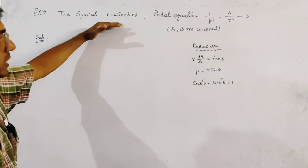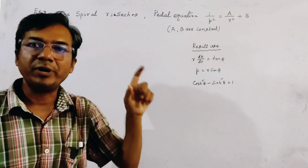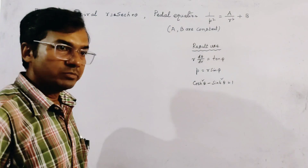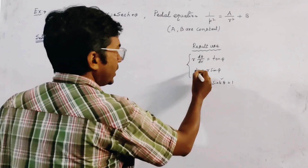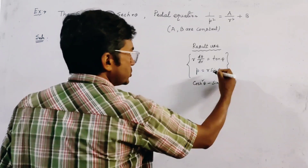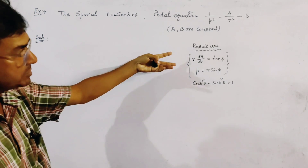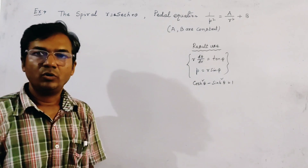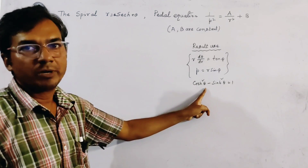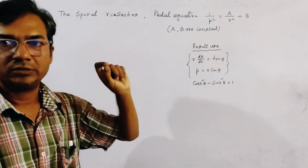This looks like a very easy problem, but it is not solved in the usual manner — this is a different type of problem. We use three important results. The first two are: R·dθ/dr = tan φ, and p = r·sin φ. These are the most important results of differential calculus, quoted in the previous video. We also use the hyperbolic identity: cosh²θ − sinh²θ = 1.